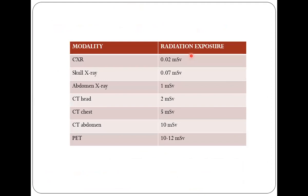This slide shows how much radiation exposure is associated with each modality. As the region of the body involved increases, radiation exposure increases. For example, chest X-ray gives 0.02 millisieverts; skull X-ray increases somewhat; head CT is about 2 millisieverts; chest CT is 5; abdomen CT is 10 millisieverts, because the area involved is greater. PET scan has the highest radiation exposure at 10 to 12 millisieverts.